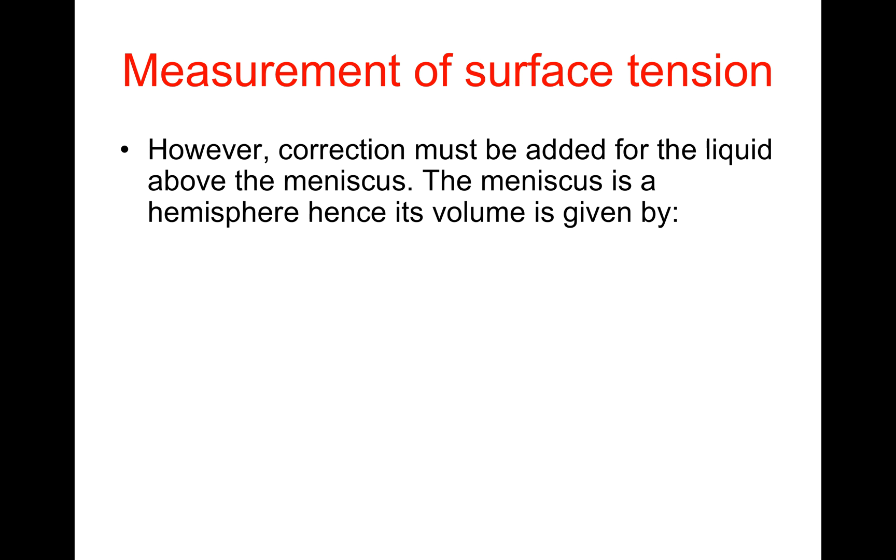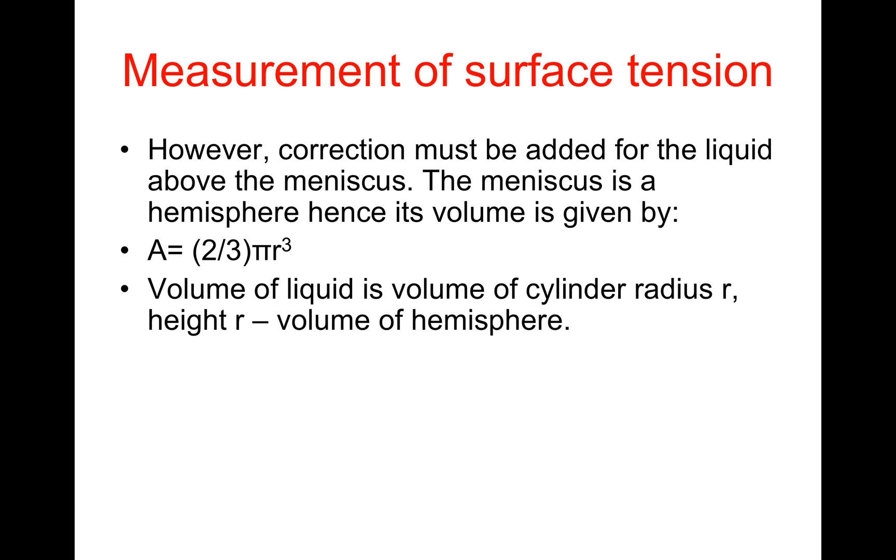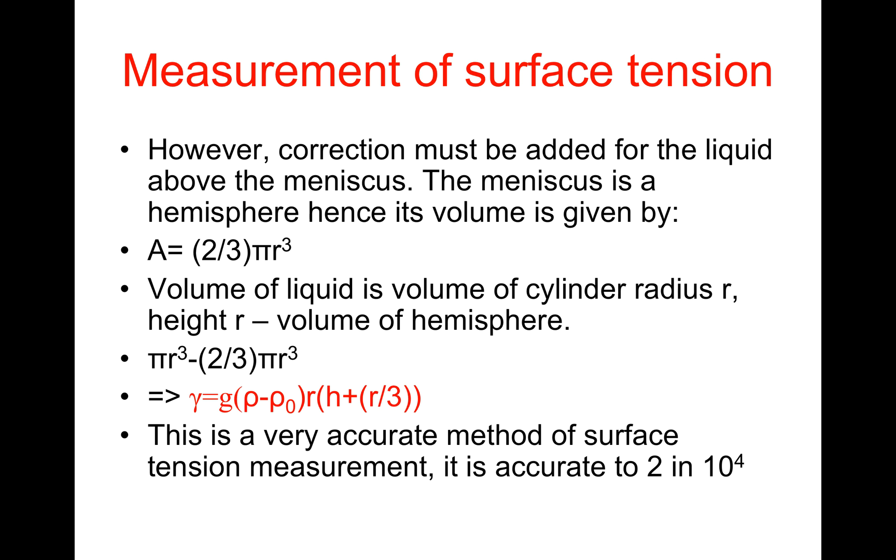However, correction must be added for the liquid above the meniscus. The meniscus is a hemisphere, hence its volume is given by A equals 2/3 πr³. The volume of liquid is volume of cylinder radius r, height r minus volume of the hemisphere, which is πr³ minus 2/3 πr³. This implies γ equals G(ρ - ρ₀)R(H + r/3). This is a very accurate method of surface tension measurement, accurate to 2 in 10⁴.